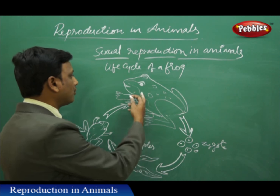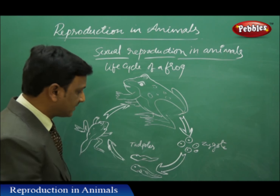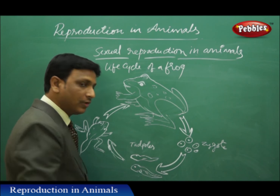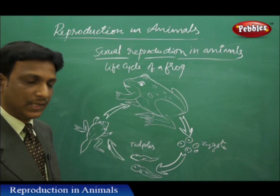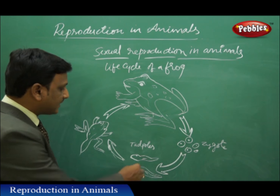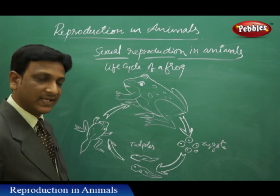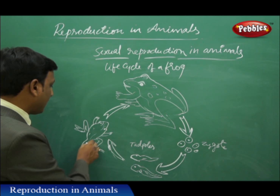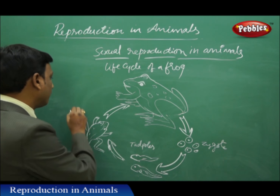Actually, frogs do not breathe with gills. But when in the stage of tadpoles, they breathe with gills. Later, the tadpole develops limbs — hands and legs — but even then it will still have a tail.